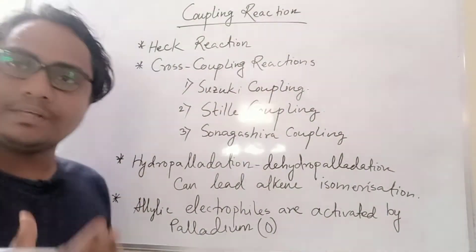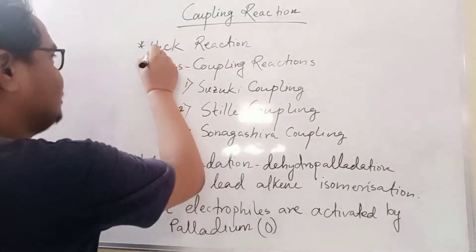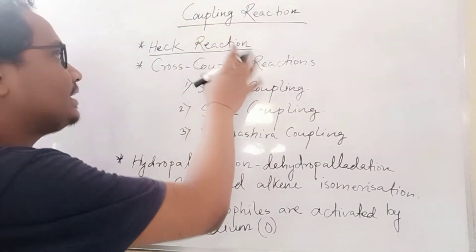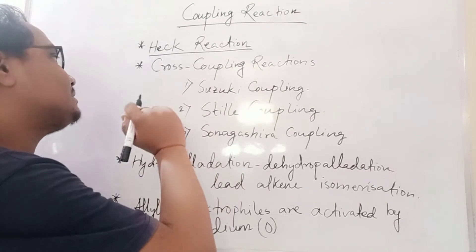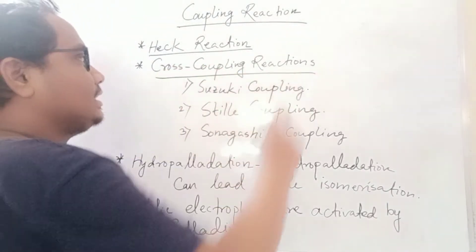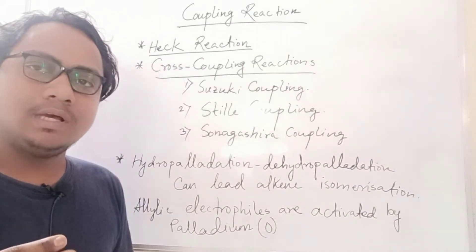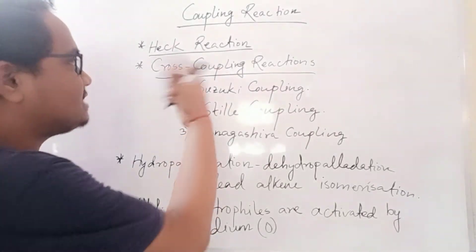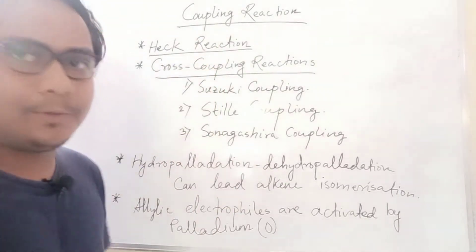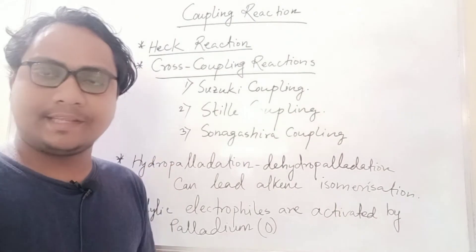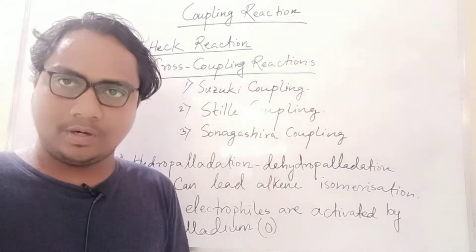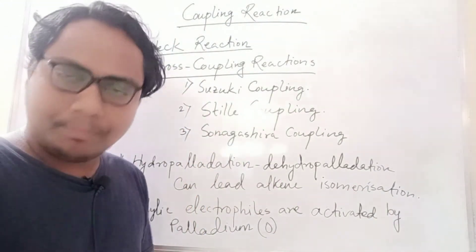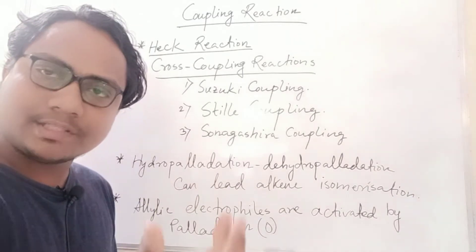Coupling reactions — whatever we studied previously — include the Heck reaction, which is a normal coupling addition. Cross coupling reactions involve coupling between one organometallic compound and an organic compound. Simple coupling means coupling an organometallic compound with an alkene in the presence of a catalyst.